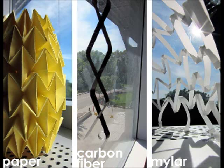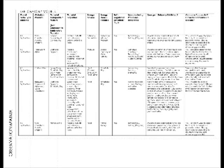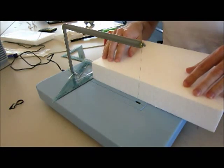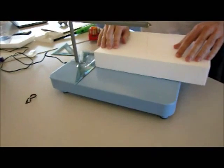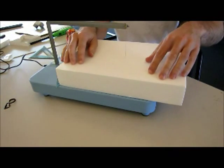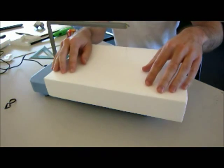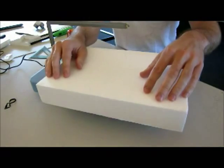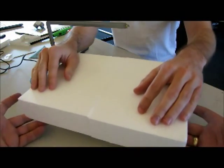Our tested material palette included urethane coated paper of various thicknesses, translucent mylar in gloss and matte finishes, basswood, plywood, surgical tubing, carbon fiber, epoxy resin, bimetallic strips, and nitinol. The most interest generated from the material study were ones that showed the greatest opportunities for flexibility.